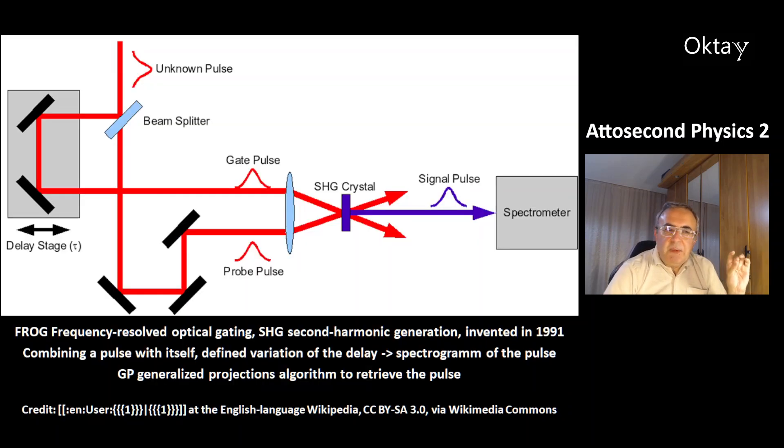This is an experiment FROG, that's called Frequency Resolved Optical Gating. It uses a second harmonic generation. An unknown pulse is split into two pulses, and then they are recombined. There is a defined variation of the delay. And with this method you can produce a spectrogram of the pulse, the combined pulse. The last step is a generalized projections algorithm to retrieve the pulse from the spectrum. That's how you can measure it.